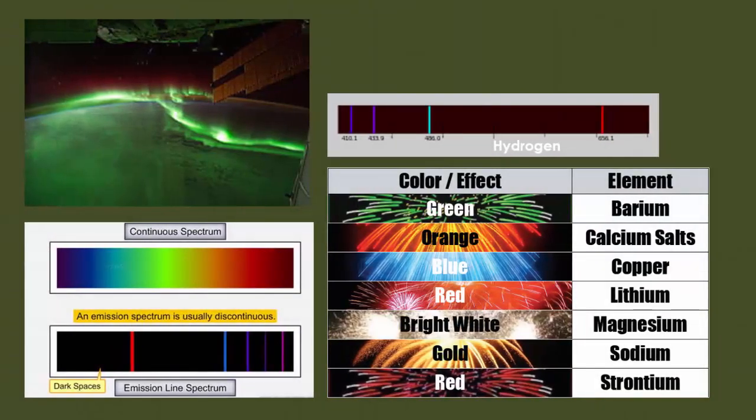We use these spectrums to see the aurora borealis. The picture in the top left is actually an image from the ISS or the International Space Station. They're actually picking up the excited electrons of different gases over the North Pole.